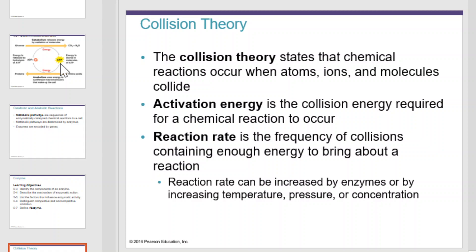Collision theory states that chemical reactions occur when atoms, ions, and molecules collide. Atoms, ions, and molecules can collide at random, creating a chemical reaction. Activation energy is the collision energy required for a chemical reaction to occur. The reaction rate is the frequency of collisions containing enough energy to bring about a reaction. Reaction rate can be increased by enzymes or by increasing temperature, pressure, or concentration.